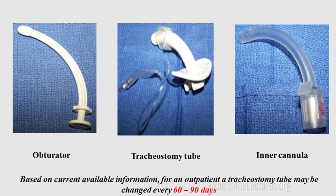This is the inner cannula: when the patient is receiving mechanical ventilation, the inner cannula goes inside the tracheostomy tube and the ventilator is connected here. When you are not ventilating, the inner cannula comes out and the patient can just use the tracheostomy tube.